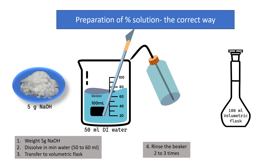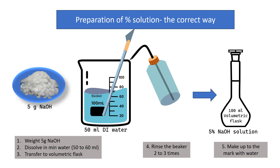Rinse the beaker 2–3 times with a small amount of water and transfer the rinsings to the 100 ml volumetric flask. Finally, make up to the mark with water. This is how we prepare 5% NaOH solution.